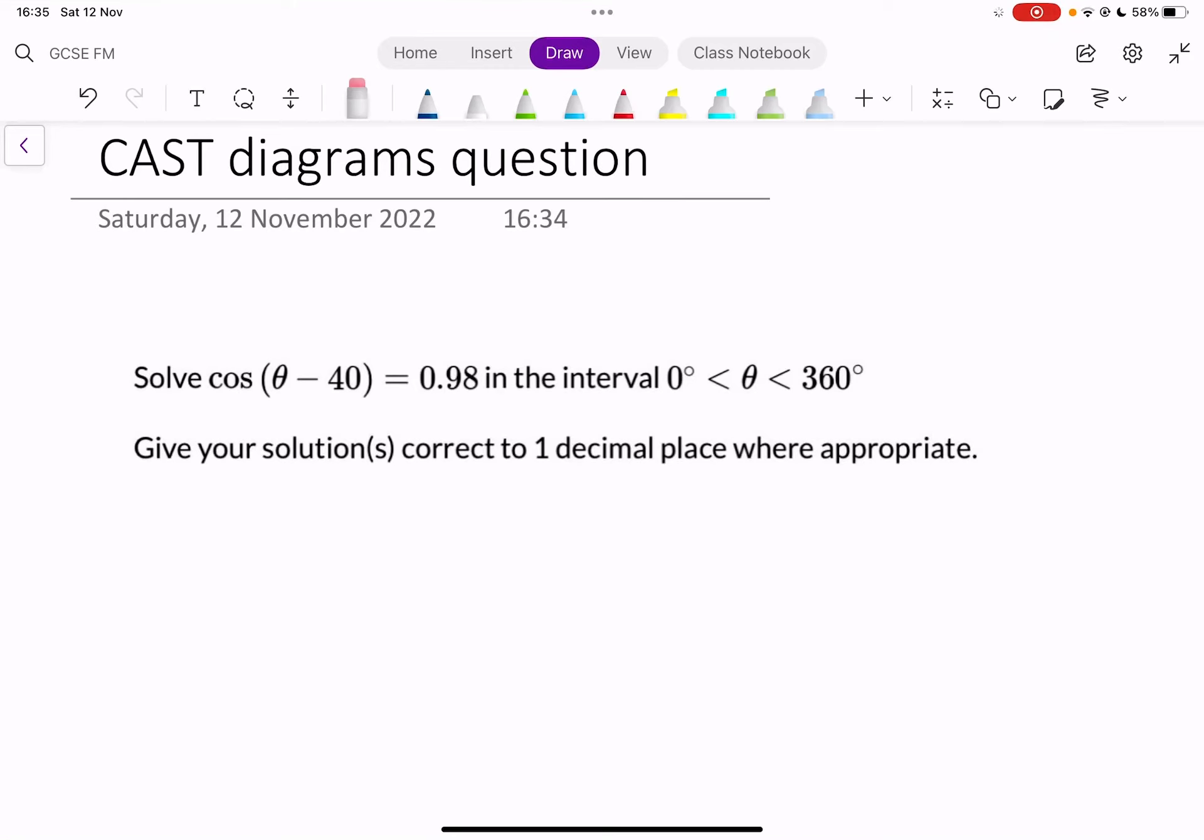In this question we have to solve cos of theta minus 40 equals 0.98 in the interval 0 is less than theta is less than 360 degrees. It says give your solutions correct to one decimal place where appropriate.